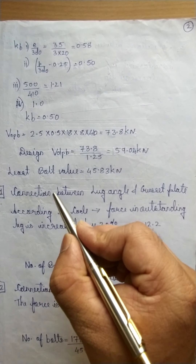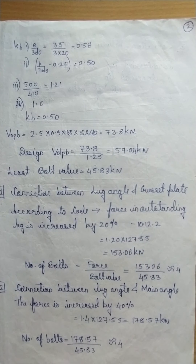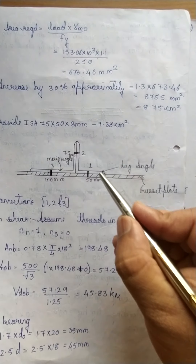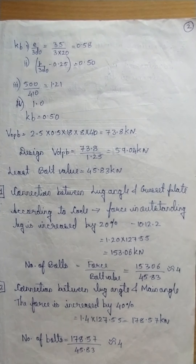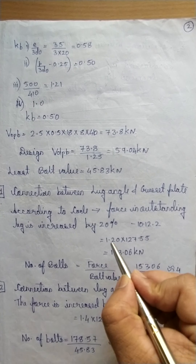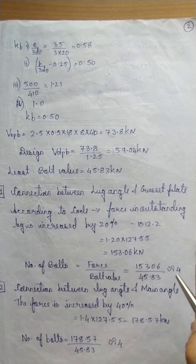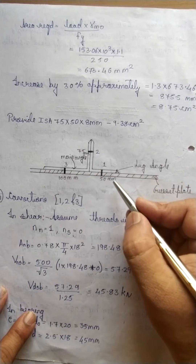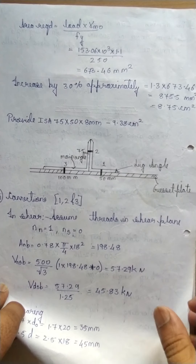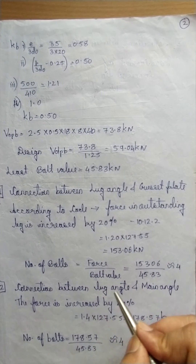Connection 1: between the lug angle and the gusset plate. According to the code, the force in the outstanding leg is to be increased by 20 percent. Number of bolts = increased force / bolt value = 4 numbers. This means for connecting the lug angle and the gusset plate, 4 number of M18 bolts are required.